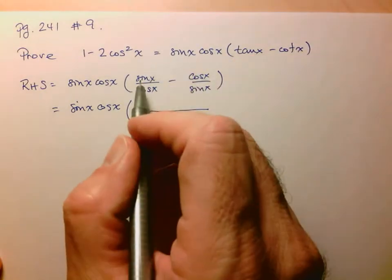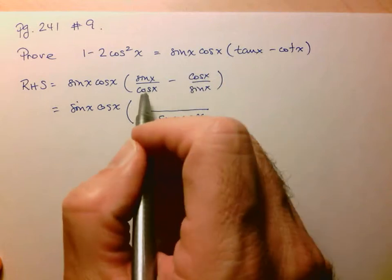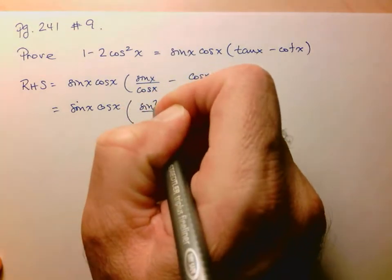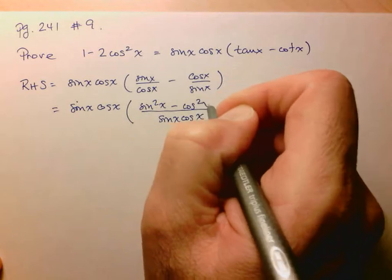And in the numerator, let's see what we have. So here, sine x, we'll have to multiply this by another sine x. So this will be sine squared x minus cos squared x.